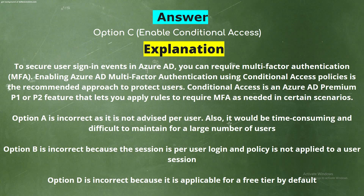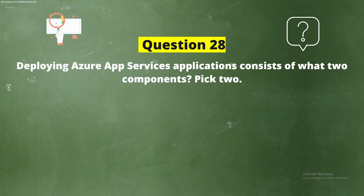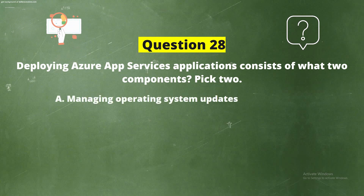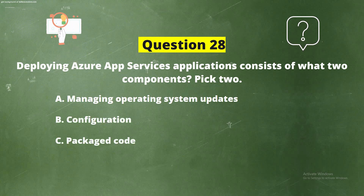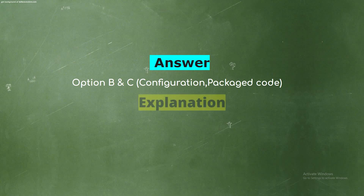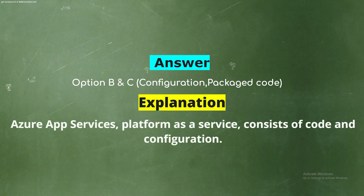Question 28. Deploying Azure App Services applications consists of what two components? Pick two options. Option A: Managing operating system updates. Option B: Configuration. Option C: Packaged code. Option D: Database scripts. The correct answers are Option B, Configuration, and Option C, Packaged code. Explanation: Azure App Services, as a platform as a service, consists of code and configuration.